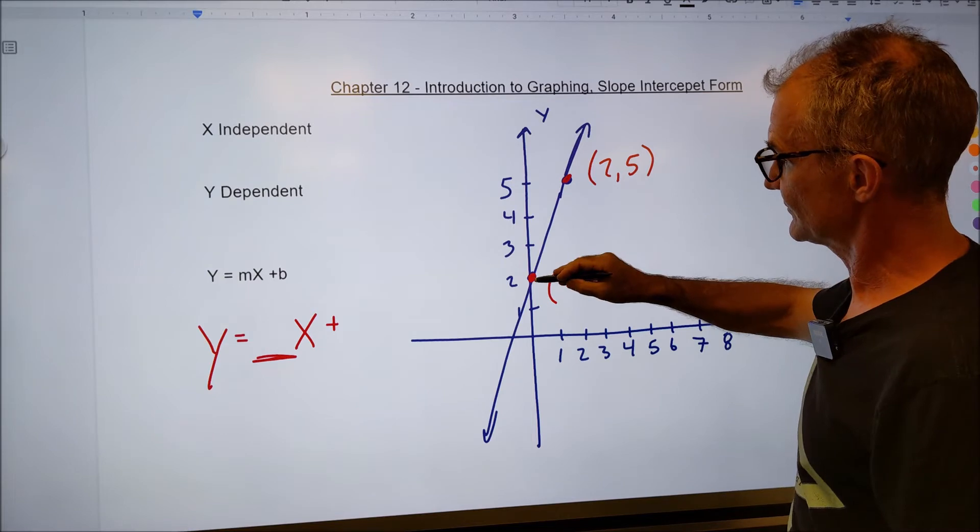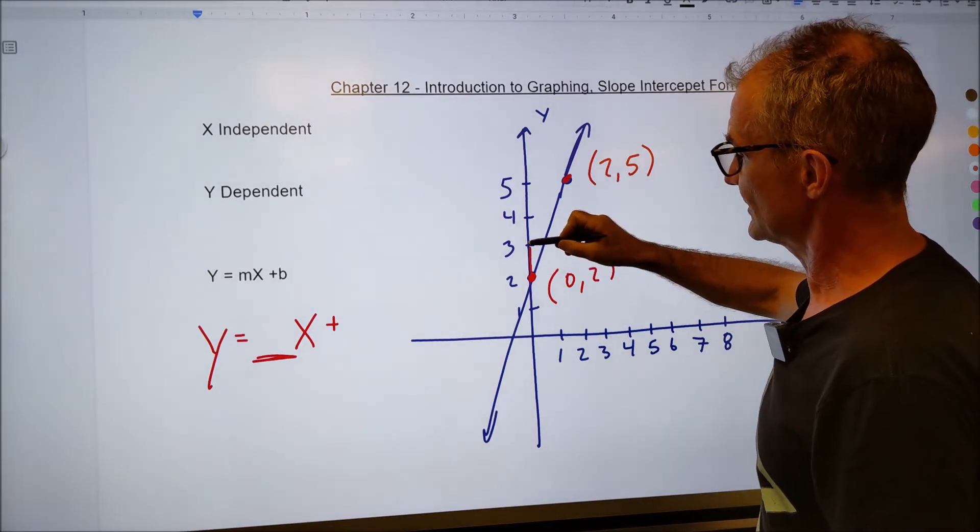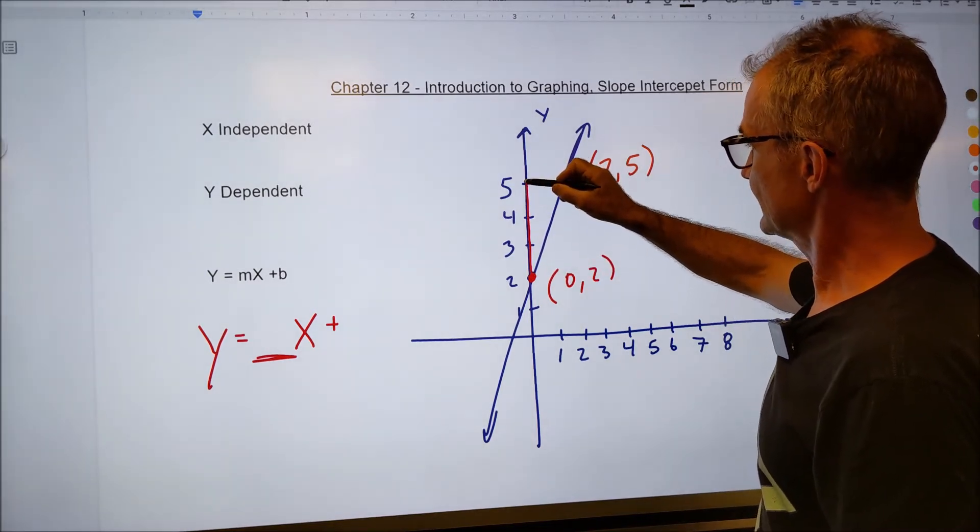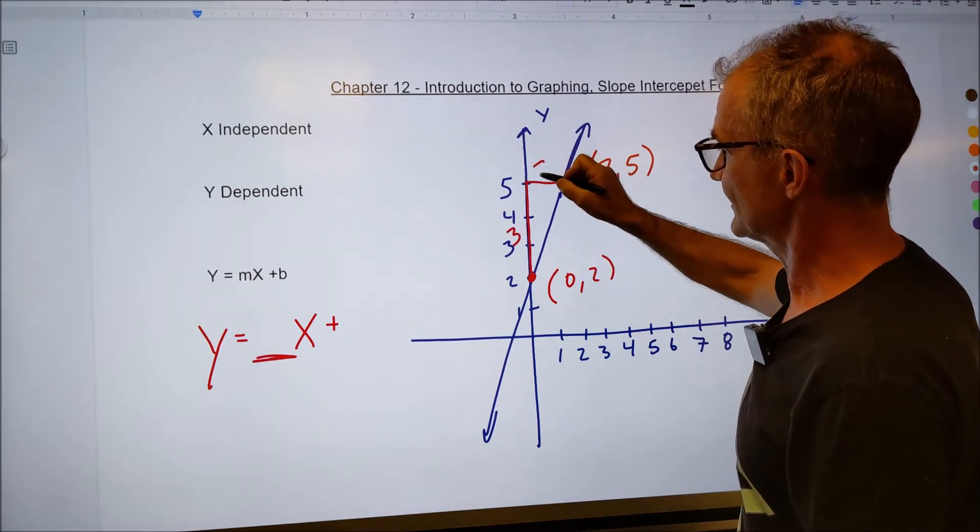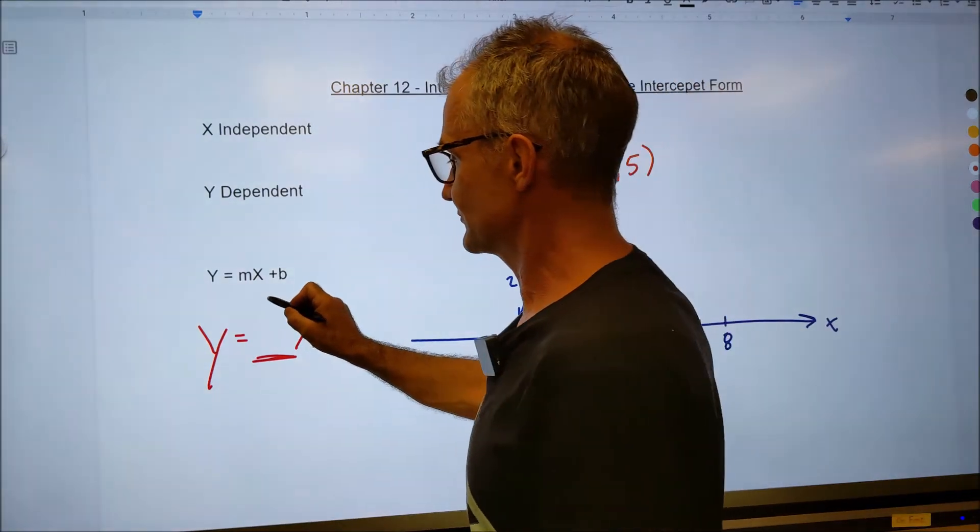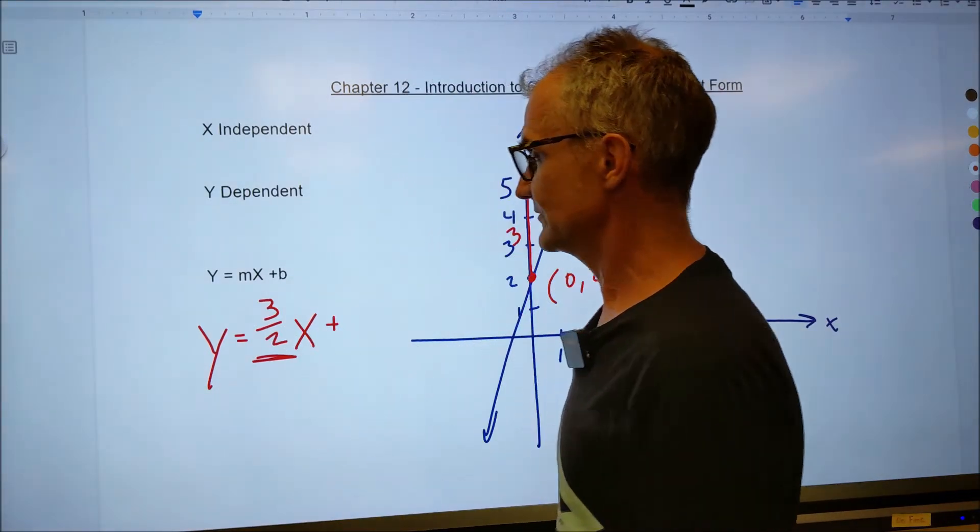So now I need to find the slope between these two points. I'm going to rise one, two, three, and then I'm going to run one, two. So I rise three, I run two. Slope is rise over run. So it's three over two x.